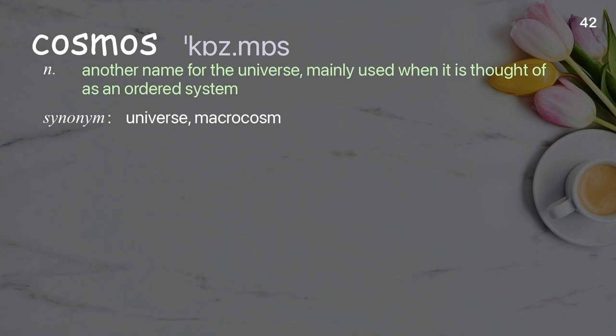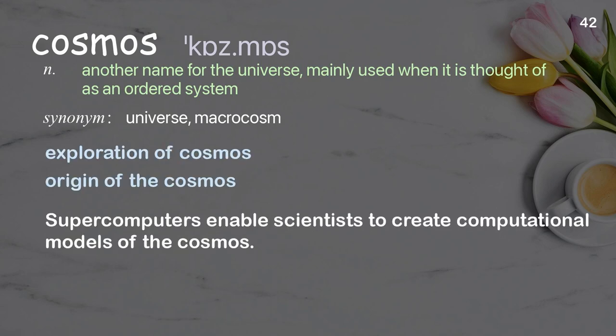Cosmos: another name for the universe, mainly used when it is thought of as an ordered system. Examples: exploration of cosmos, origin of the cosmos. Supercomputers enable scientists to create computational models of the cosmos.